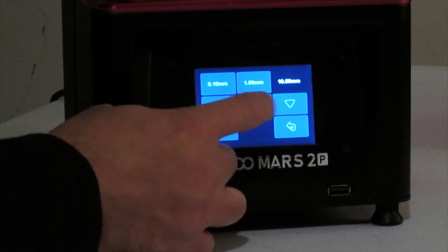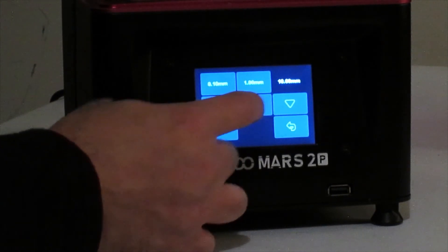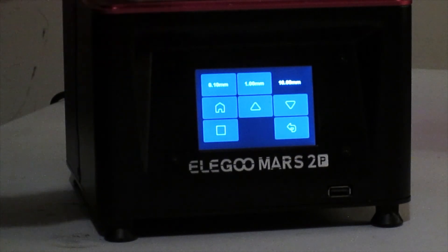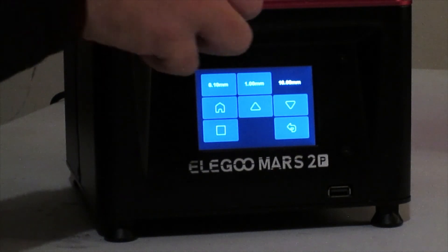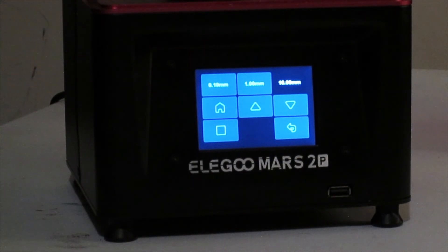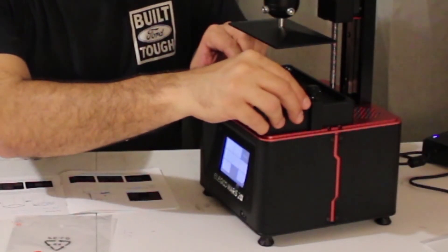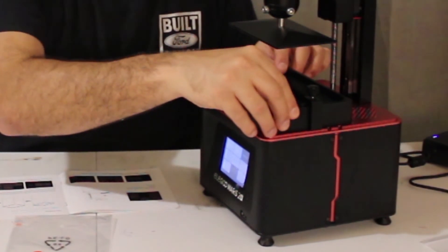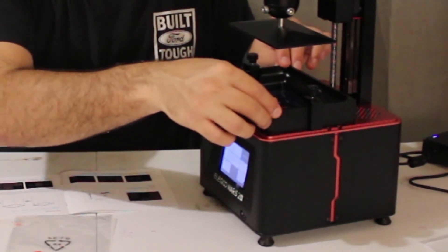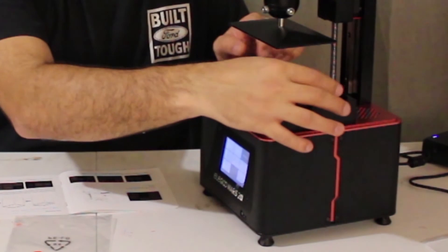Now we can go ahead and change it to 10.1mm. Go ahead and lift it up several times, lift the build plate back up. We can go ahead and take out our piece of paper and we can put the resin tank back on. Once it's high enough, go ahead and slide your resin tank back on, and we can go ahead and tighten our screws.